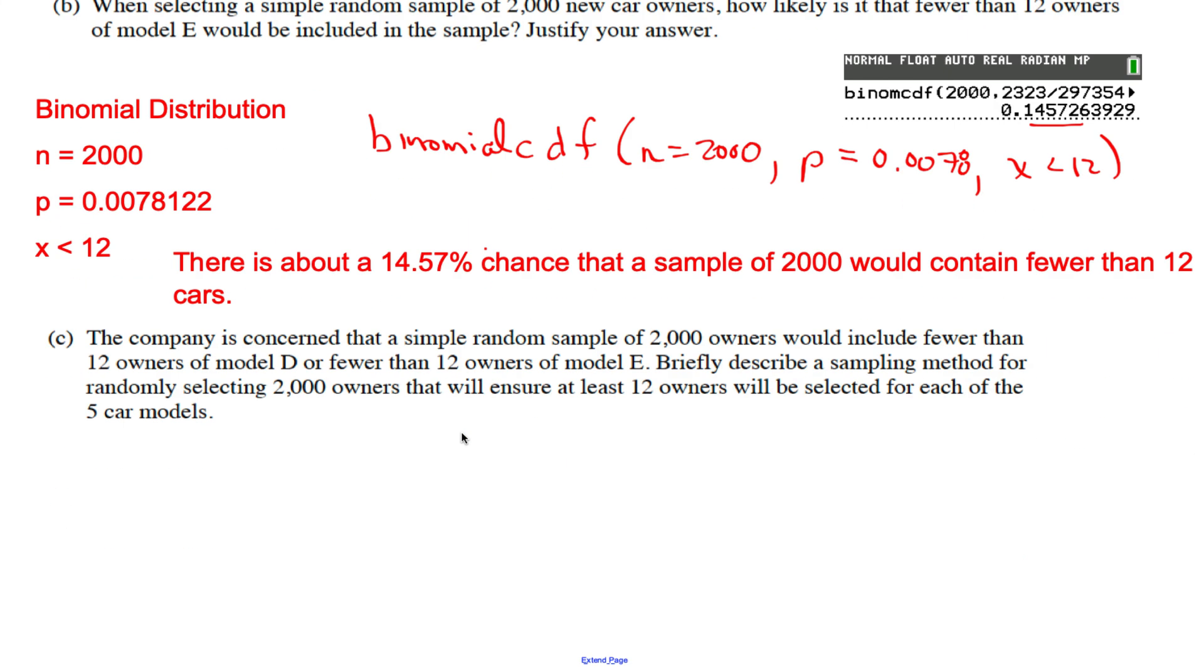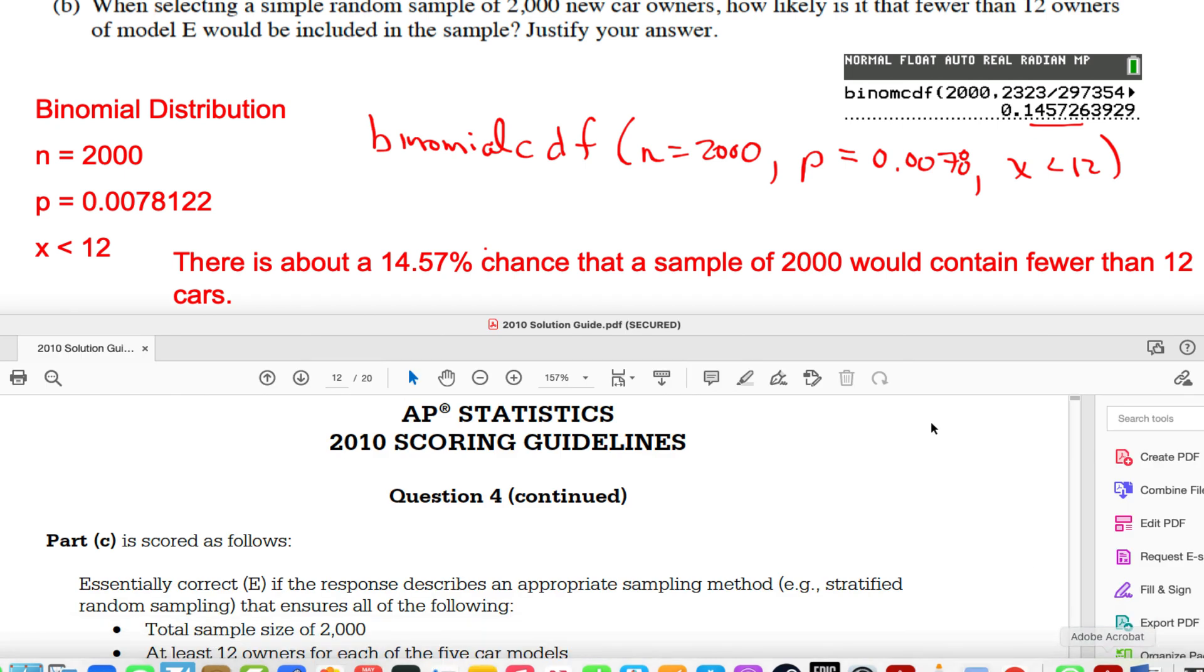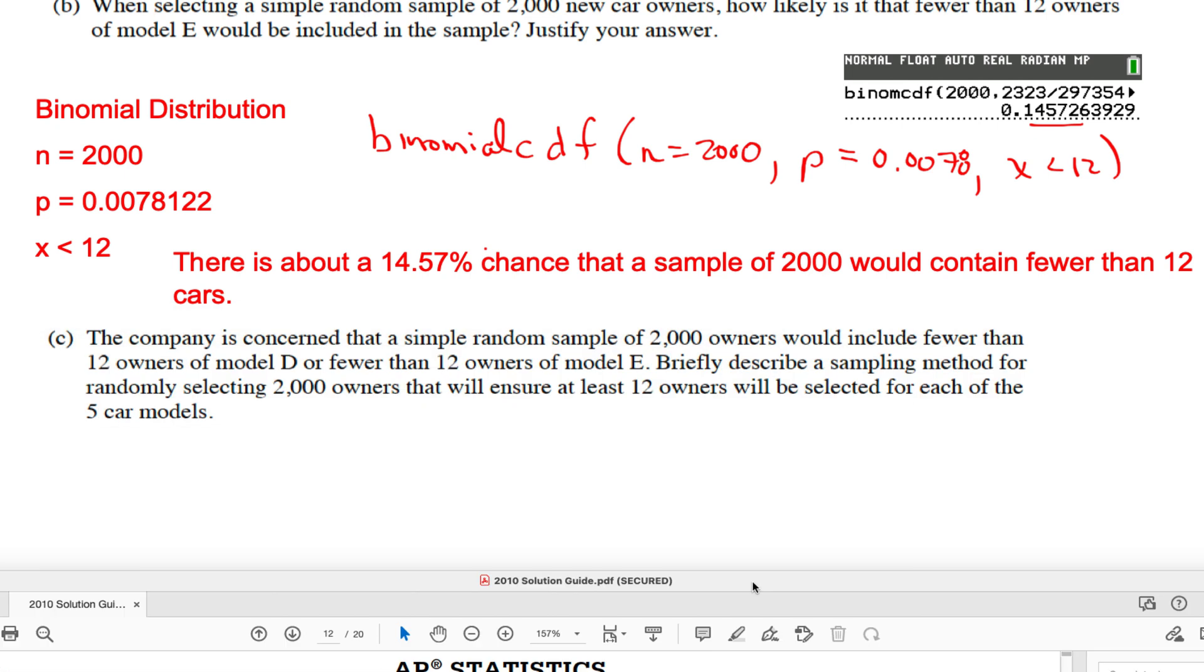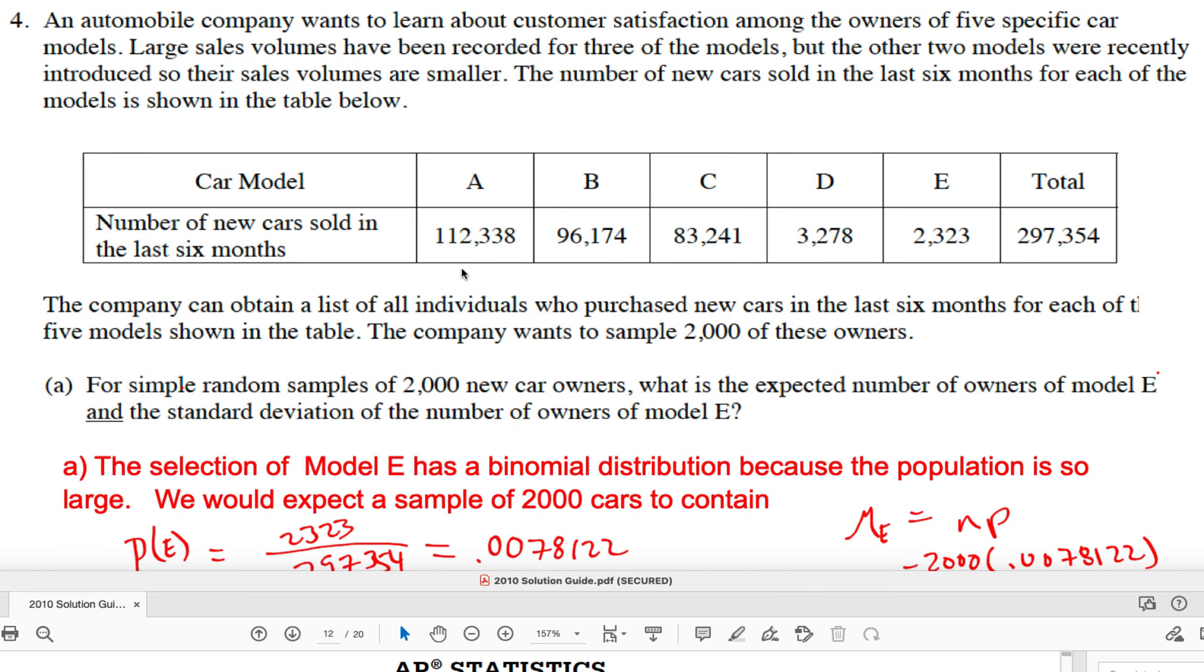Lastly, the company is concerned that a simple random sample of 2000 owners would include fewer than 12 owners. Even though it's unlikely, it could happen - 14% chance - and they want to guarantee that their sample has 12 owners of D and 12 owners of E, etc. Let's pull up the scoring guide first. Before we do that, what are you trying to get in your brain here? If you select a sample from this population, you want to guarantee that there's at least 12 of each. Part of your brain should trigger into the idea that we should probably stratify this in some way.